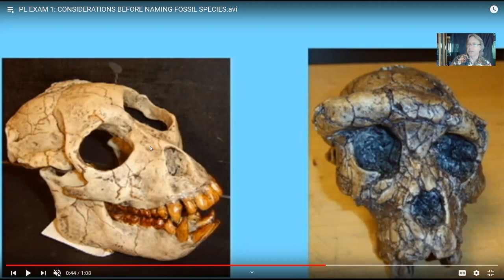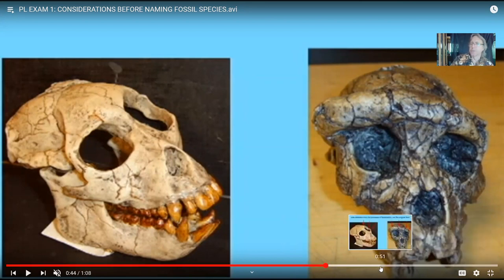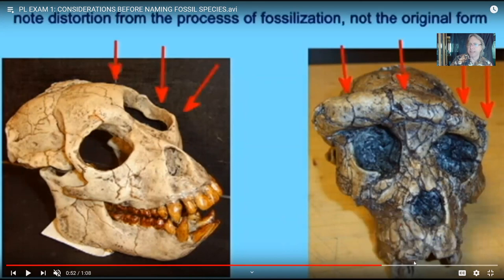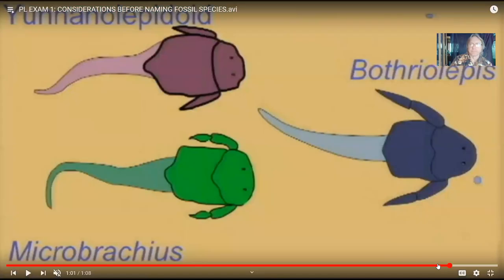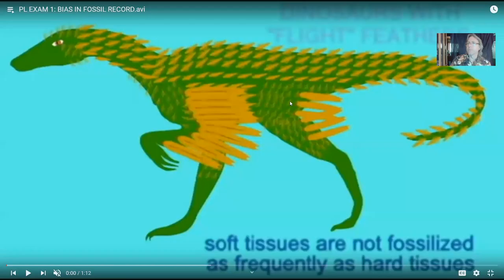For example, Proconsul — an ancestral ape — had its skull distorted by fossilization, so it looks a little different from how the animal appeared in life. Similarly with Sahelanthropus, the hominid. So to summarize: you can't just name everything a new species. Sometimes instead of multiple species, you just have a variable species like dogs, or different genders, or larvae versus adults, or the fossilization has distorted one specimen.